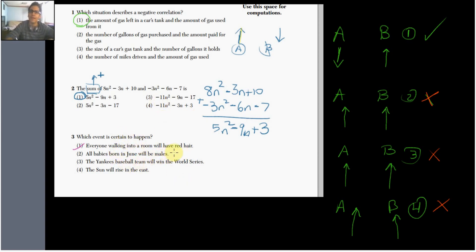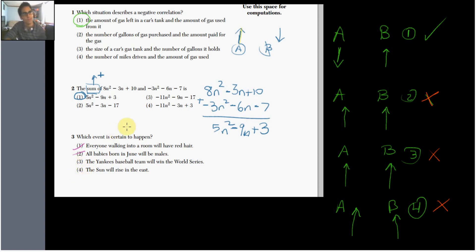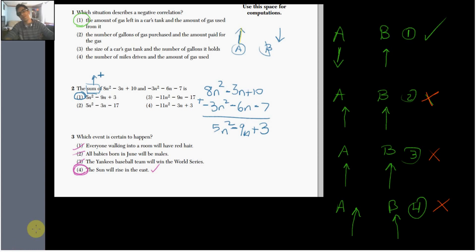Choice three: the Yankees baseball team will win the World Series. As much as I might say that always happens because the Yankees are a gangster team, that is not always going to happen. So we're left with: the sun will rise in the east. Unless the apocalypse is coming, the sun will always rise in the east. That is our certain event.